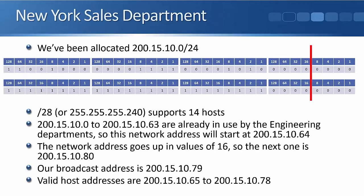We need to support 14 hosts. The smallest possible subnet we can use is a /28. A /28 means we have four bits available for host addresses: 2⁴ = 16, minus 2 gives 14 hosts. Addresses 200.15.10.0 through .63 are already used by the engineering departments, so the network address we start with is 200.15.10.64. The line is after the 16, so 64 + 16 = .80; take one away and our broadcast address is 200.15.10.79. Available host addresses are 200.15.10.65 to .78.